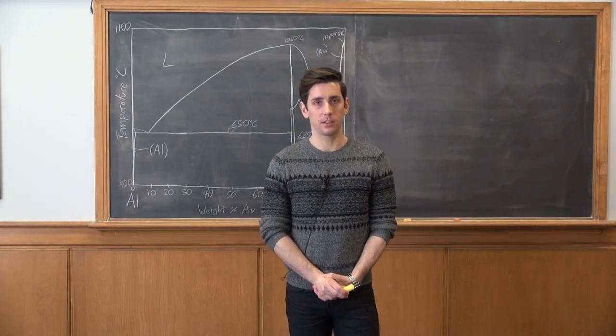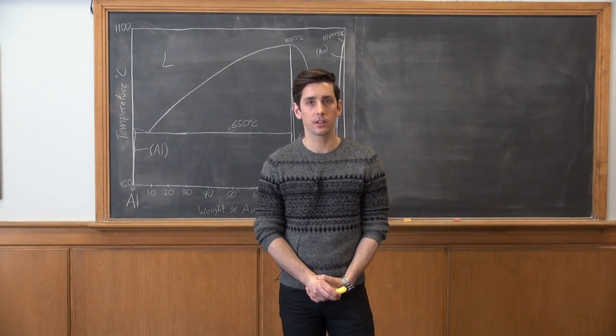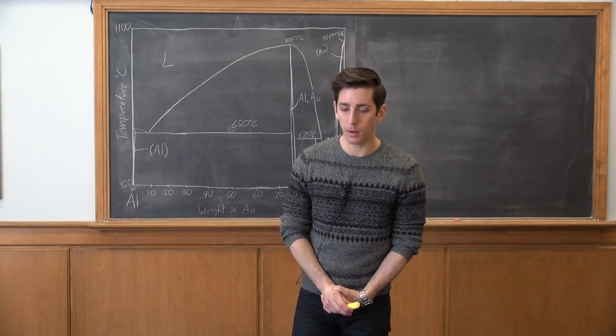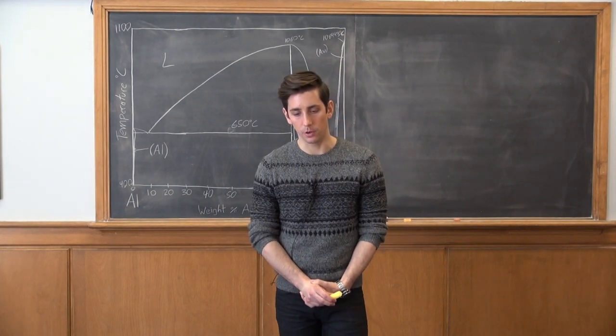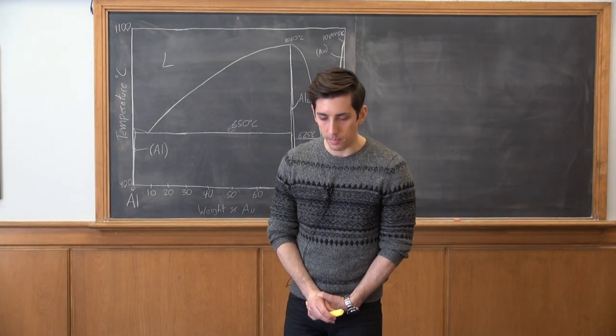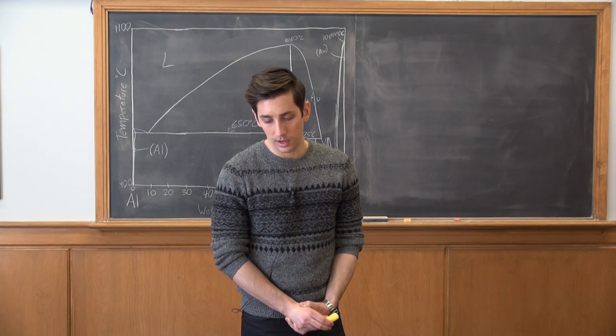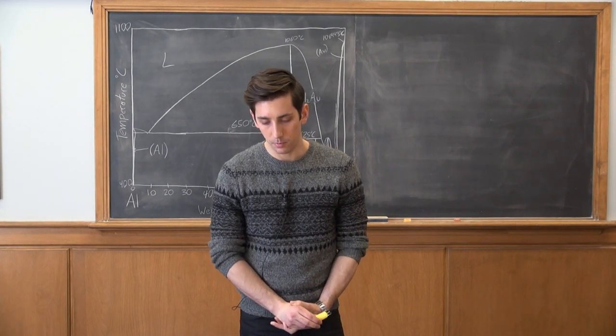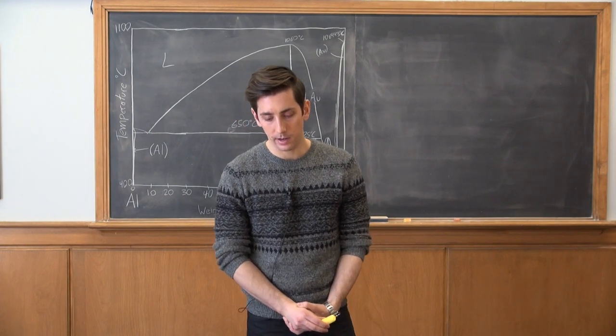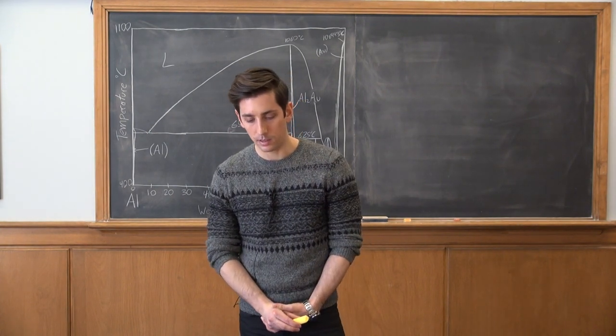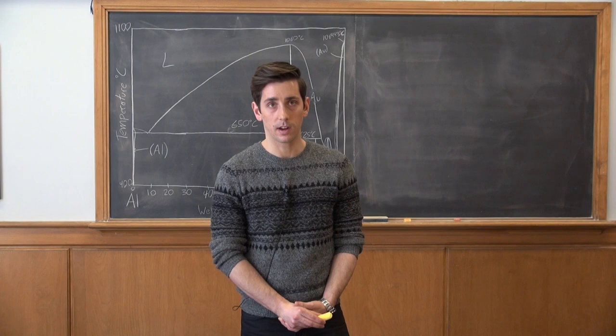Hi, I'm David. I'm a PhD student in materials engineering and I'm going to be doing a problem from the MSE 101 final exam from 2013. This is problem five. It reads: a one kilogram sample of a 30% weight gold alloy of the aluminum gold phase diagram below is solidified under equilibrium conditions to 649 degrees Celsius.